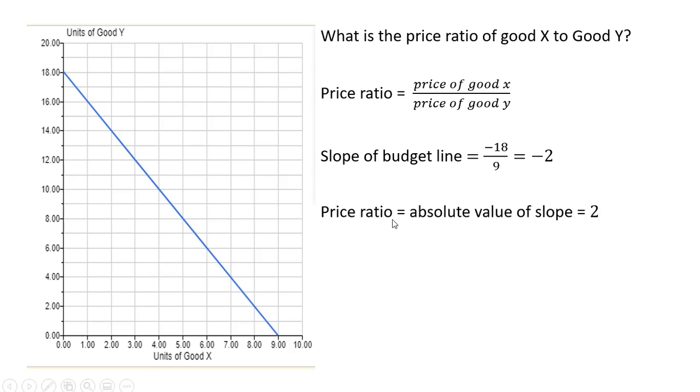The key point here is that the price ratio equals the absolute value of the slope of the budget line. In this case, the price ratio equals 2.